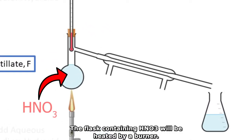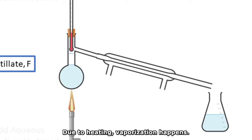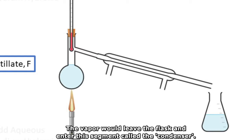The flask containing HNO3 will be heated by a burner. Due to heating, vaporization happens, and the vapor will leave the flask and enter this segment which is called a condenser.